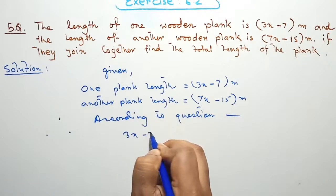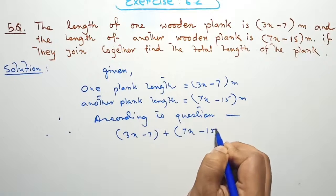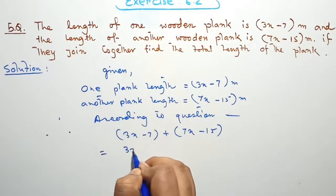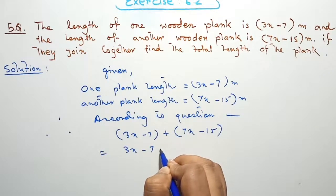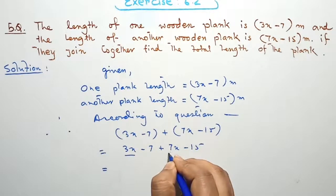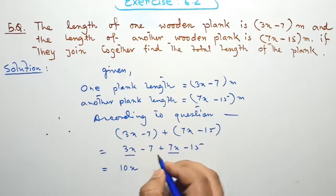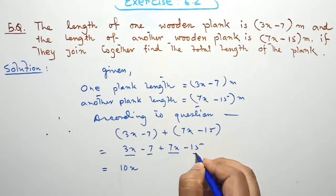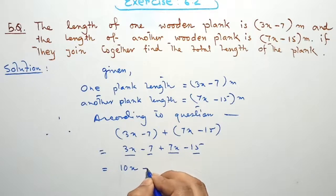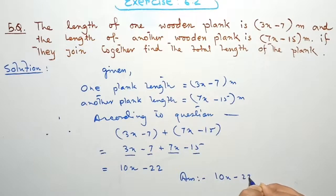3x minus 7 plus 7x minus 15. Here, 3x plus 7x equals 10x, and minus 7 minus 15 equals minus 22. Therefore, the answer is 10x minus 22 meters.